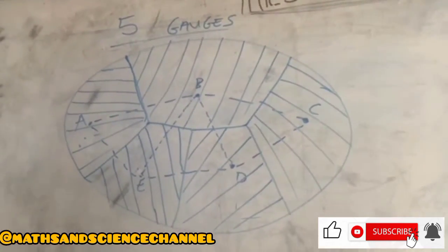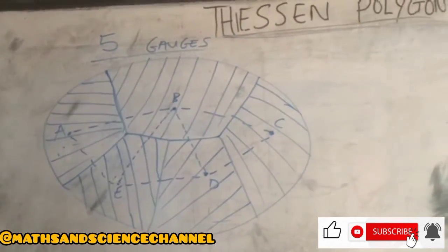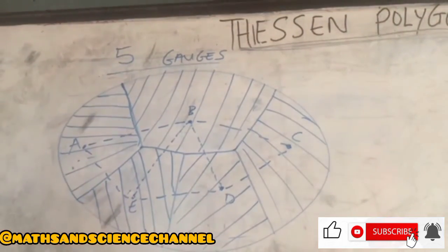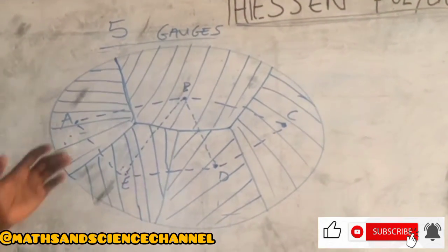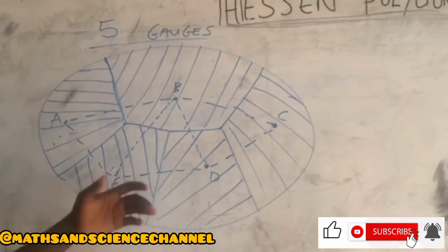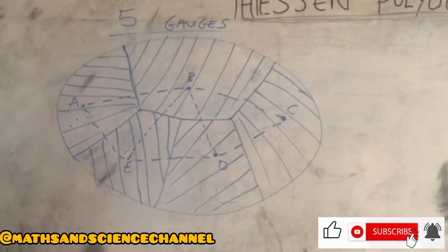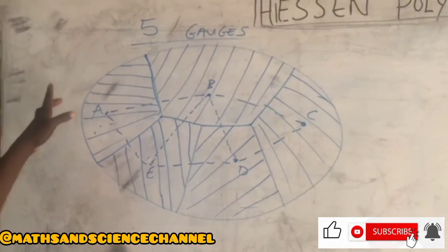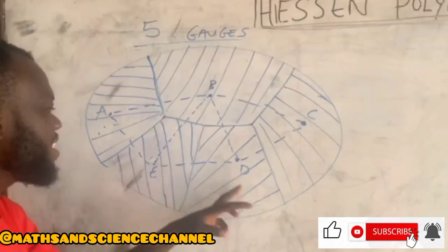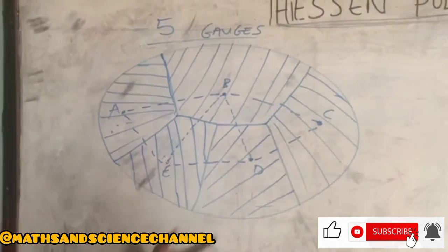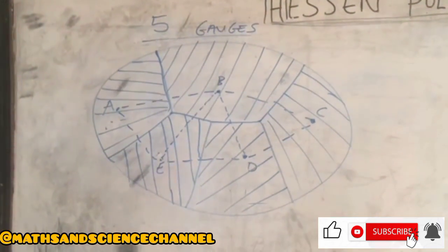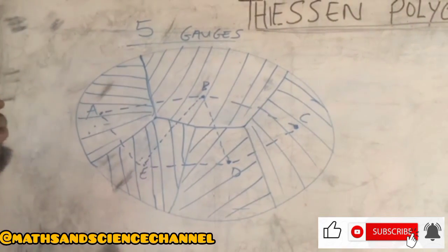All right, so we are done. So the calculations follow the same trend as gauge one, gauge two, and three gauges. Just that here you are going to get region A, region B, region C, region D, and region E, and you follow the conventions as well when you are told according to the questions.